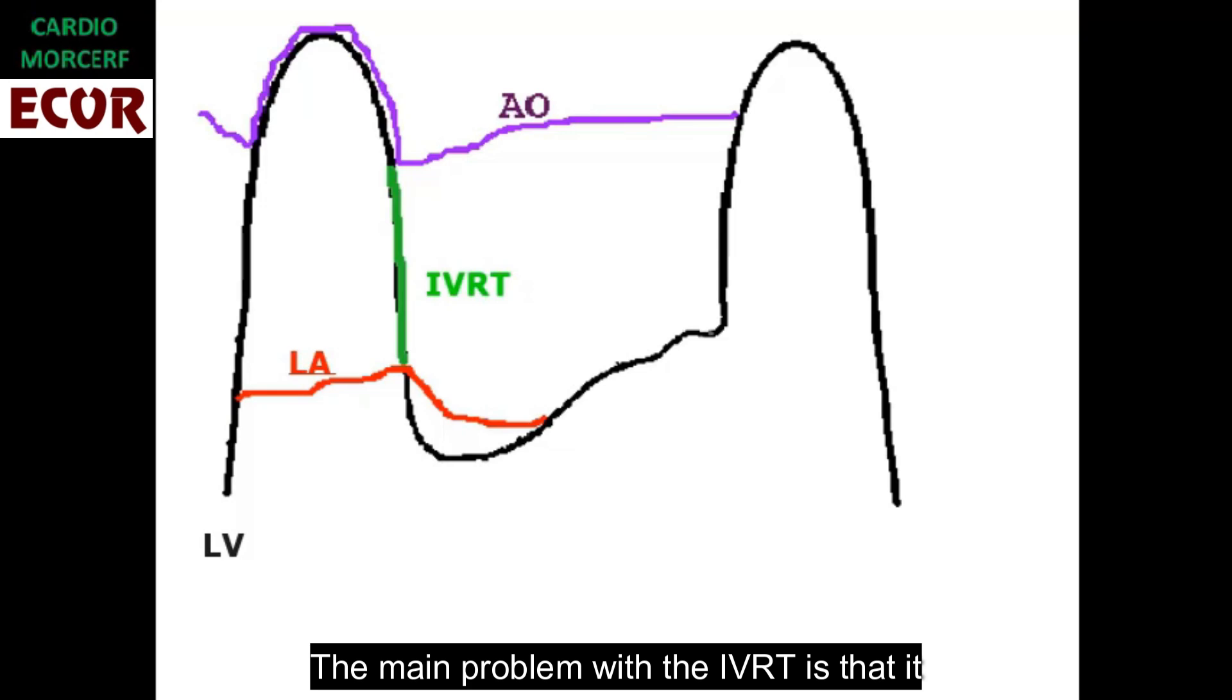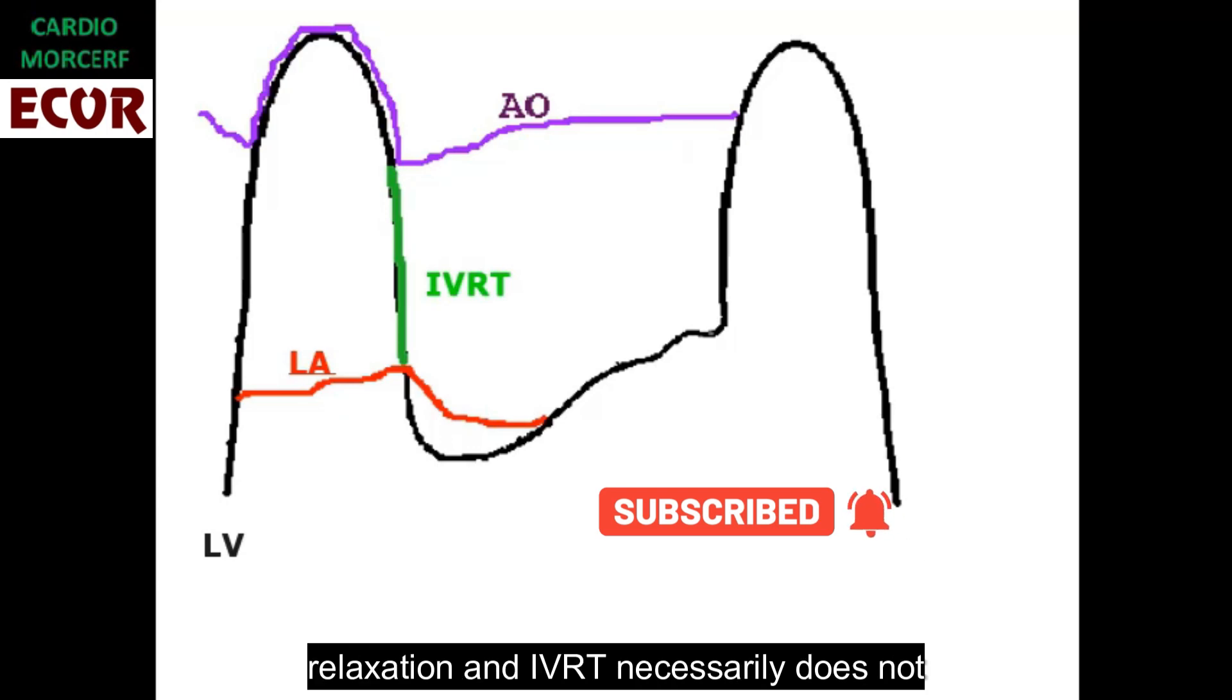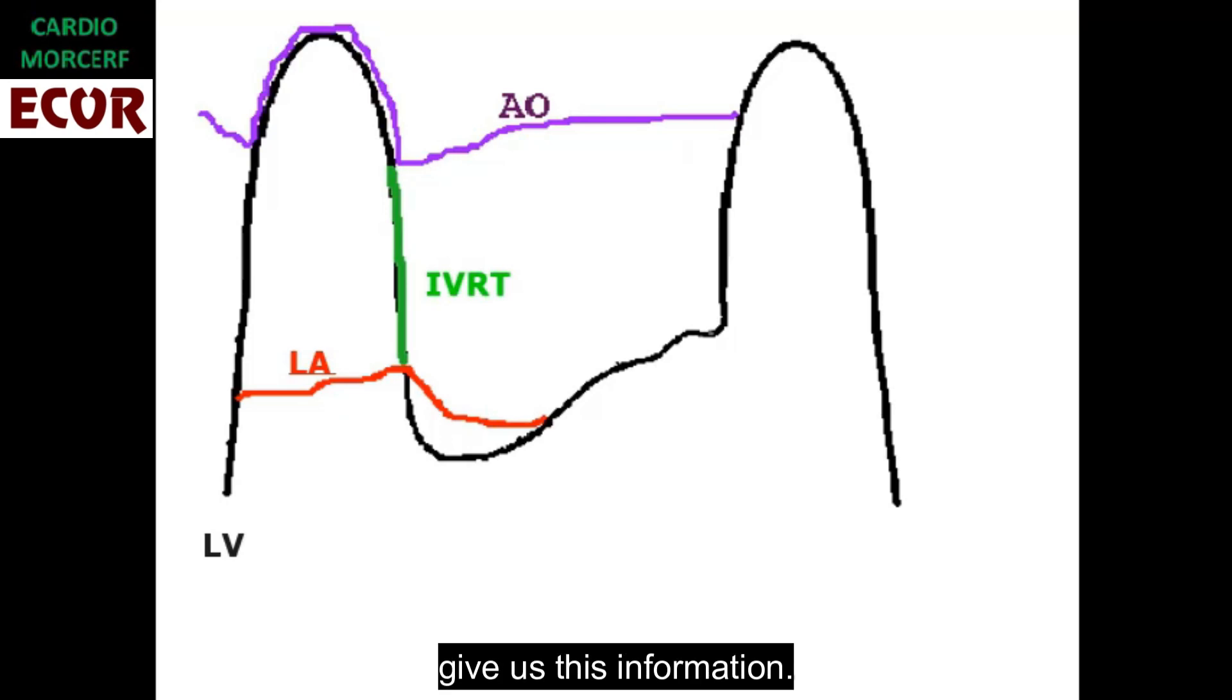The main problem with the IVRT is that it is too dependent on the aortic arterial and the left atrial pressure. We are interested in the velocity of relaxation, and IVRT necessarily does not give us this information.